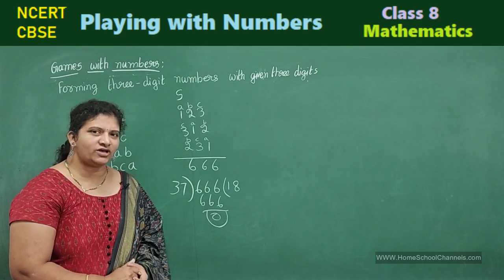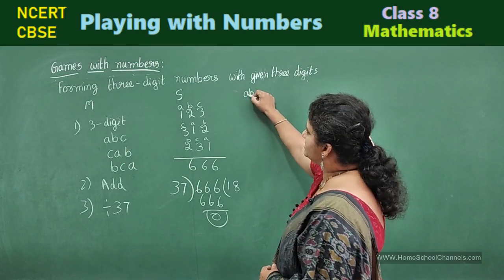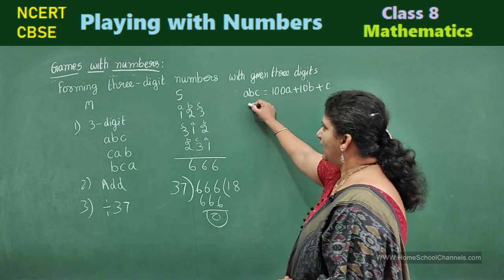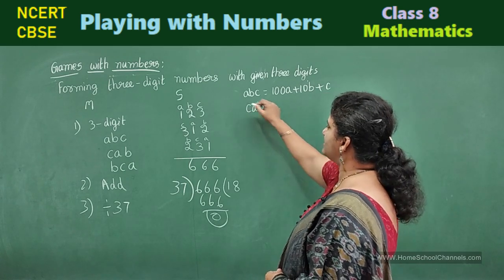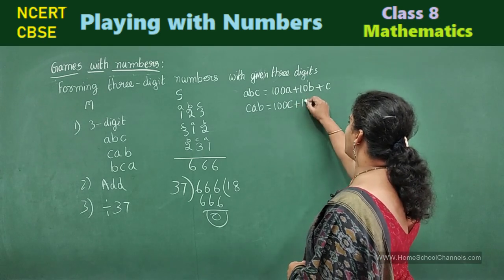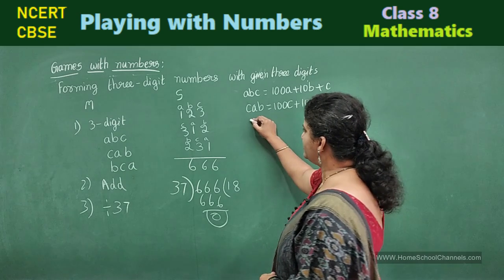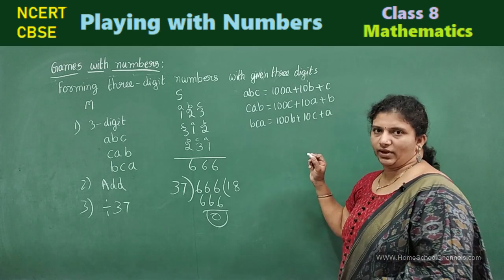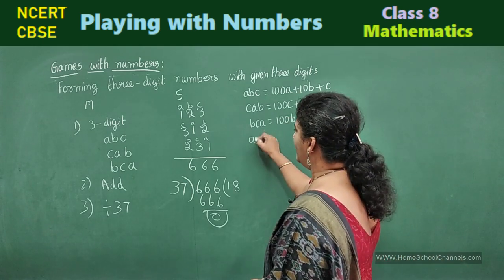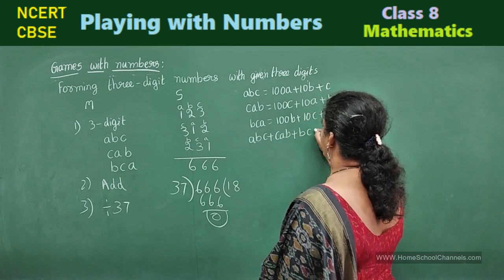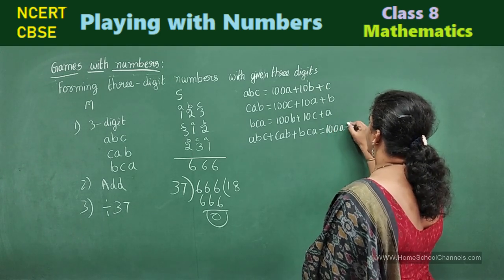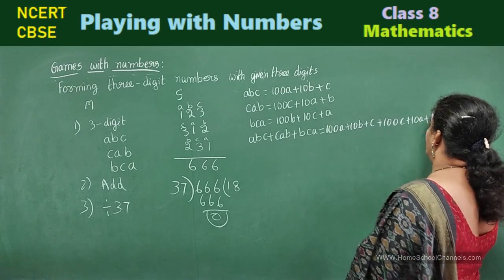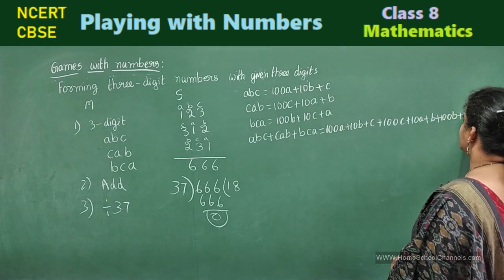Let us reveal this trick. How it will be possible? Sundaram have taken three digit number as ABC. Write it in general form, 100A plus 10B plus C. And next, write this in CAB, this three digit number rearrange. Again, this general form, 100C plus 10A plus B. Now, again rearrange, BCA. Write this in general form, 100B plus 10C plus A. Now, add all these. If you add ABC plus CAB plus BCA. If you add, you get 100A plus 10B plus C plus 100C plus 10A plus B plus 100B plus 10C plus A.